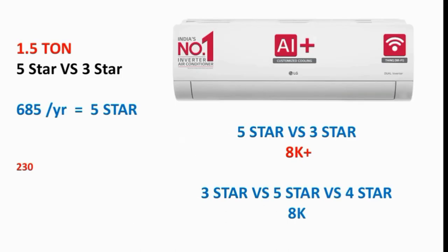Let's look at the star rating. If you take a 5-star AC, it will consume around 685 units per year. If you take a 3-star AC, it will consume around 220 to 250 units more. The 5-star AC saves power over time, so the investment is recovered in a second year through electricity savings.